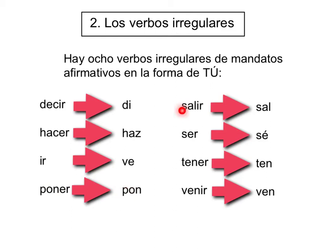Ser, to be, es sé — con acento sobre la e. Tener, to have, es ten. Y venir, to come, es ven.